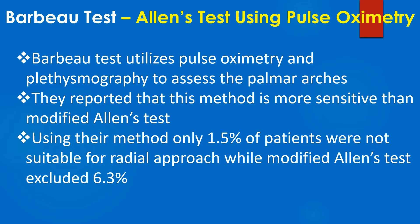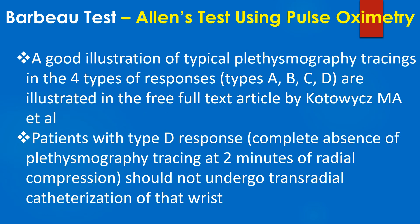The Barbo test utilizes pulse oximetry and plethysmography to assess the palmar arches. This method is reported to be more sensitive than the modified Allen's test. Using their method, only 1.5% of patients were not suitable for the radial approach, while the modified Allen's test excluded 6.3%.